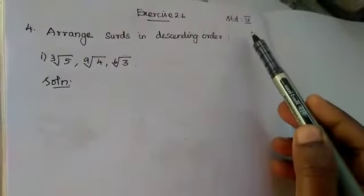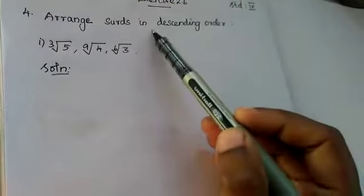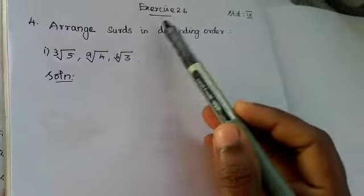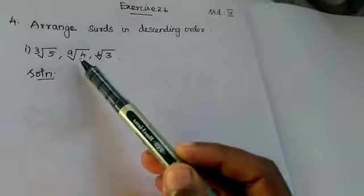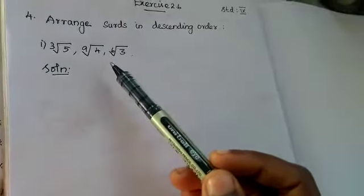Good morning students, now you are welcome back to our 9th standard mathematics class. Today we are going to do exercise 2.6 fourth sum, arrange surds in descending order. We want to arrange the surds in descending order.